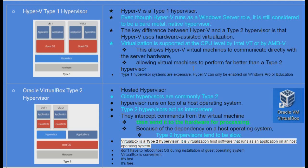Hyper-V's virtualization is supported at the CPU level by Intel VT or AMD-V, allowing virtual machines to communicate directly with server hardware and perform far better than a Type 2 hypervisor, which is purely a software solution. Type 1 hypervisor systems are very expensive, and Hyper-V can only be enabled on Windows Pro or Education edition — not on Home edition. To enable Hyper-V as a Windows Server role, you need Windows Pro or Windows Education.